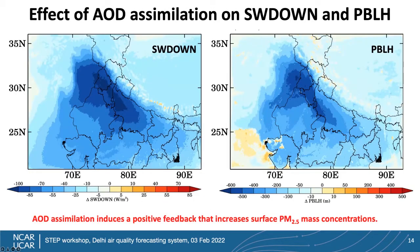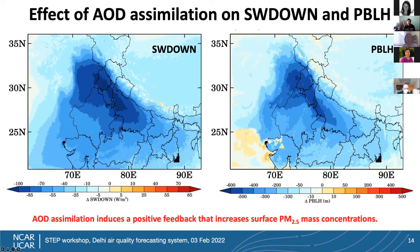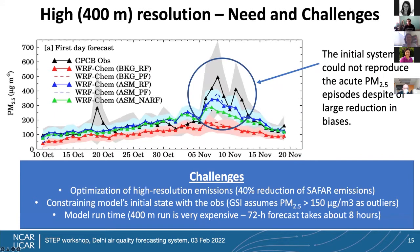AOD assimilation induces a positive feedback — decreasing downward solar radiation at the surface by about 100 W/m² on average and reducing the planetary boundary layer height by about 500 meters — which increases surface PM2.5 concentrations in the model. Although we were improving forecast accuracy, we were not quite reaching the observations, so we decided to go down to 400-meter resolution.